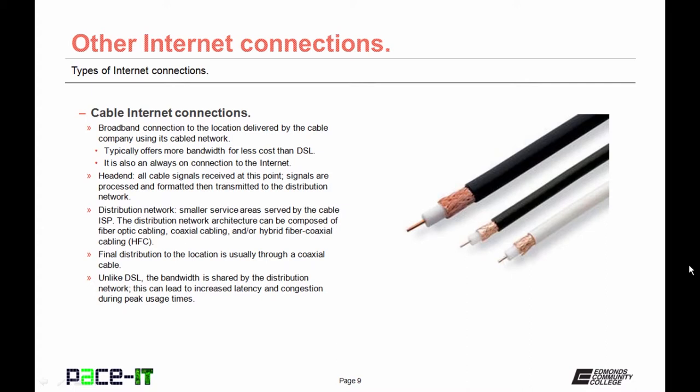The final distribution to the home or office is usually through a coaxial cable. Unlike DSL, the bandwidth that the cable ISP provides is shared by the distribution network. This can lead to increased latency and congestion during peak usage times as everybody is surfing the internet.